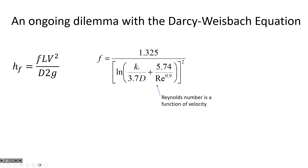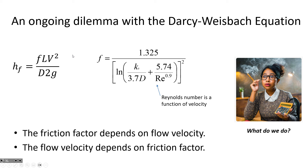Sometimes the flow rate is given — there will be problems where Q is given at the outset and you can avoid this dilemma. But this dilemma applies in situations where there's no pump, where there's a free-flow condition, and we don't know what the flow rate will be between two reservoirs or from a reservoir to a free discharge. Reynolds number depends on velocity, velocity depends on friction factor which depends on Reynolds number, and so on. So what do we do? We've started with a guess of the f value, but we can do better.